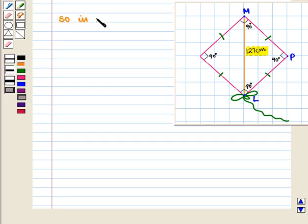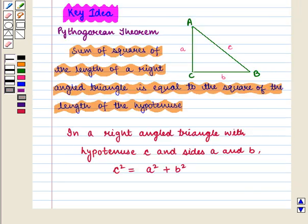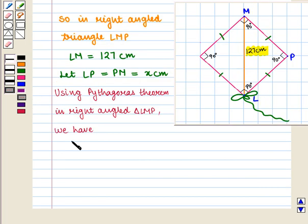So, in right-angled triangle LMP, LM is equal to 127 cm and let LP which is equal to PM be equal to X cm. Now, using Pythagoras theorem in right-angled triangle LMP we have LP² + PM² = LM².